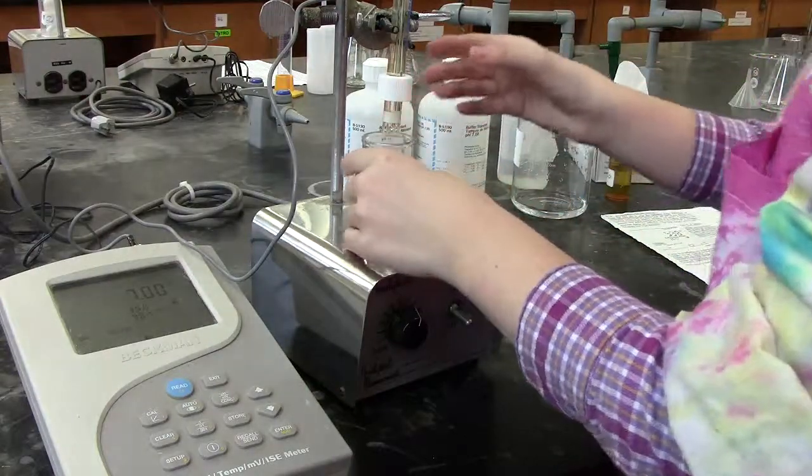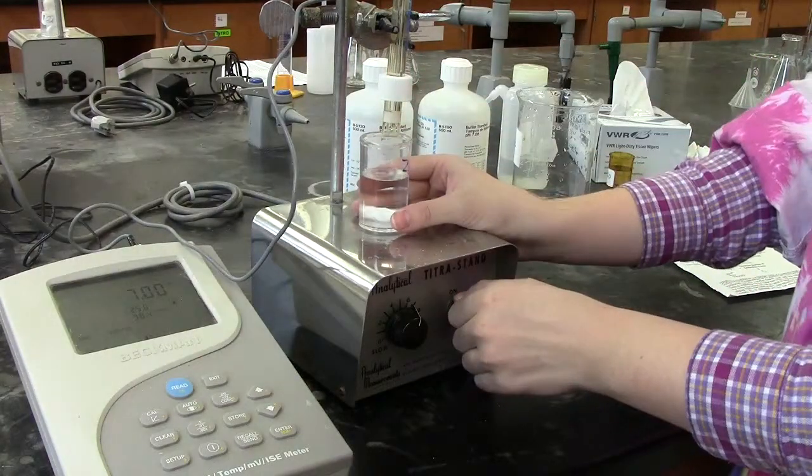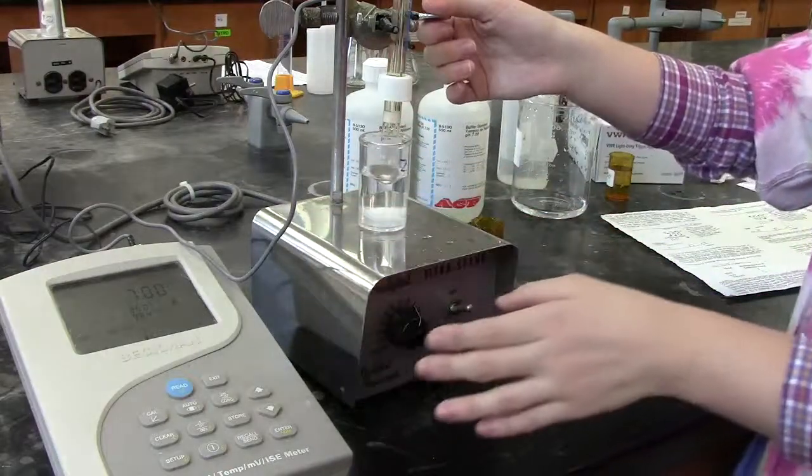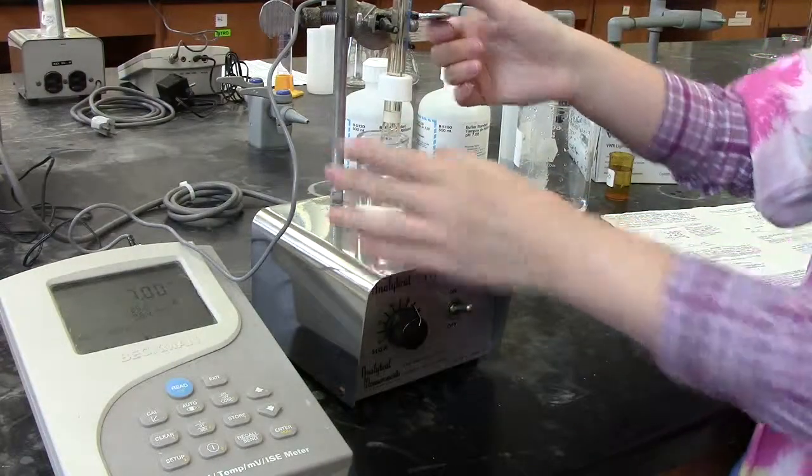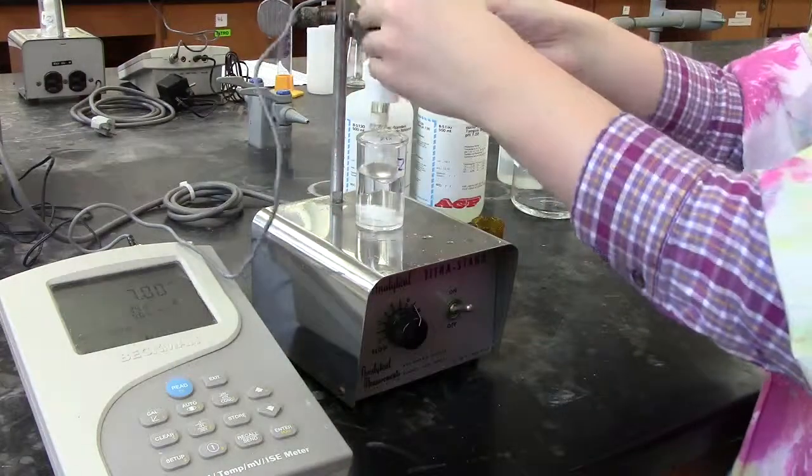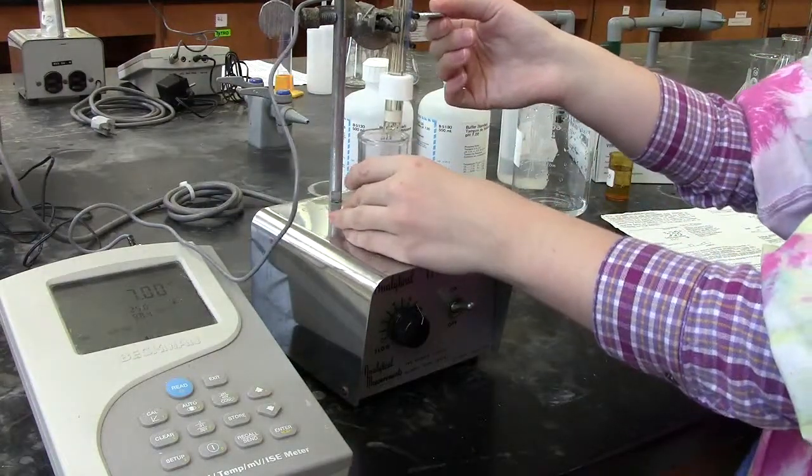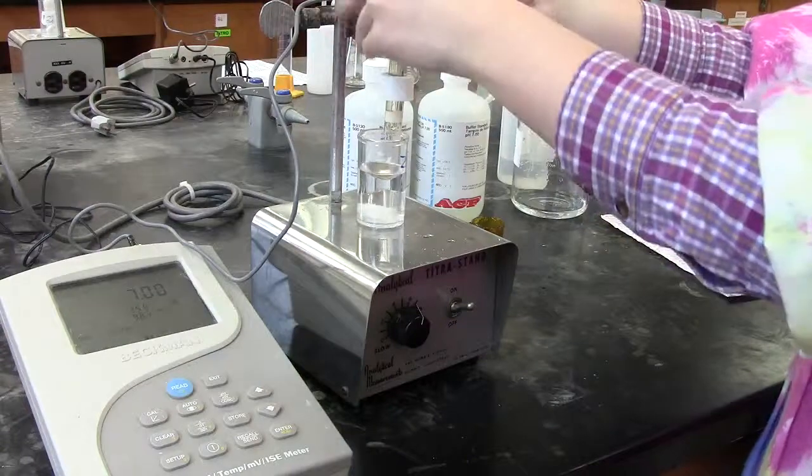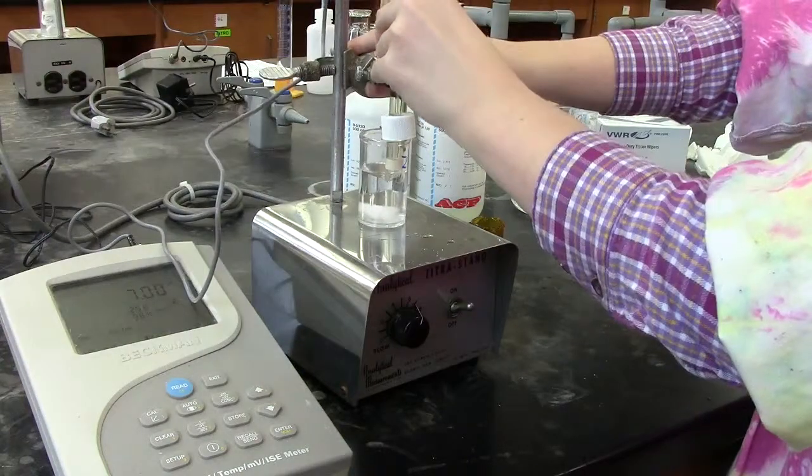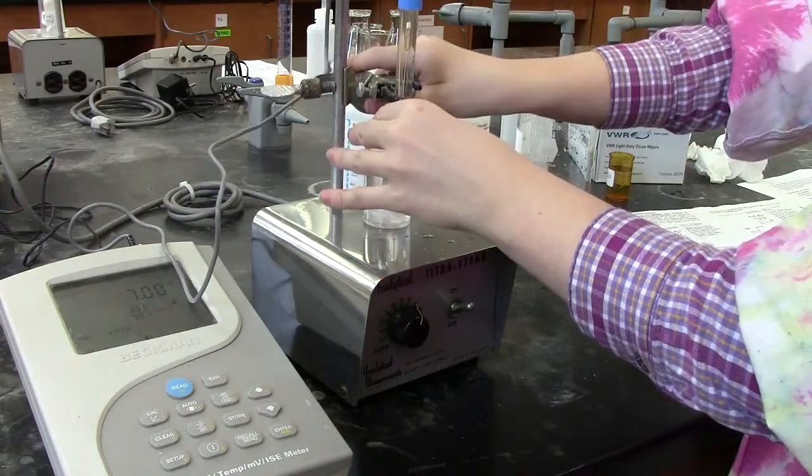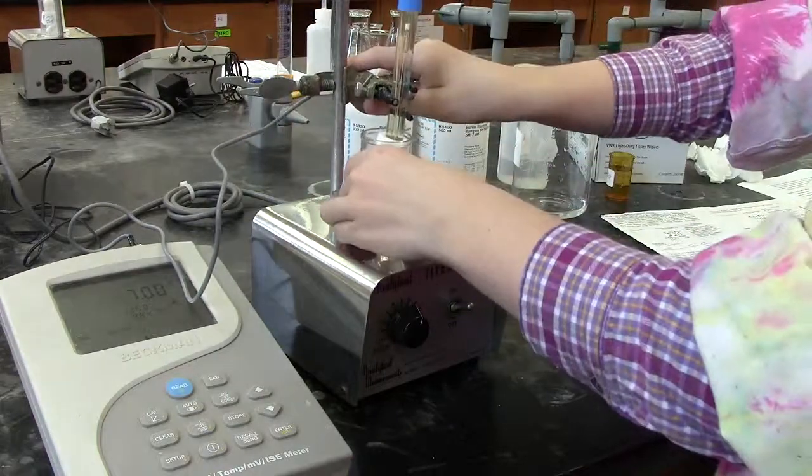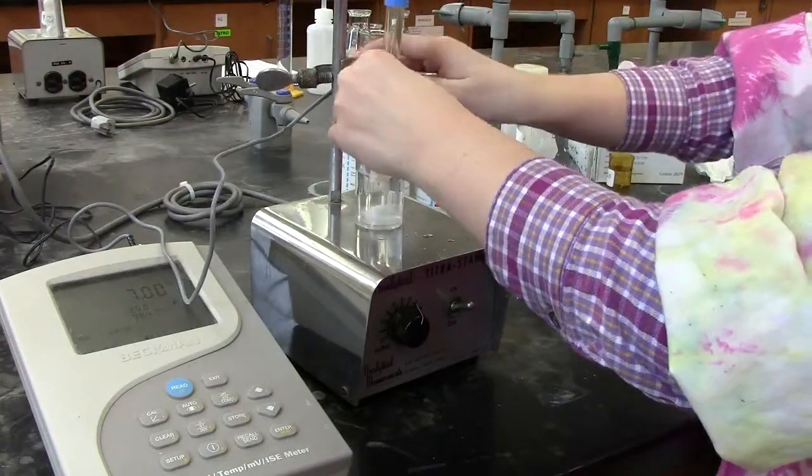When measuring an unknown solution, it is important to make sure that the solution is stirring. Sometimes it's necessary to adjust the electrode so that it is not interfering with the stir bar. Make sure that the electrode is completely immersed in the solution, but not being hit by the stir bar.